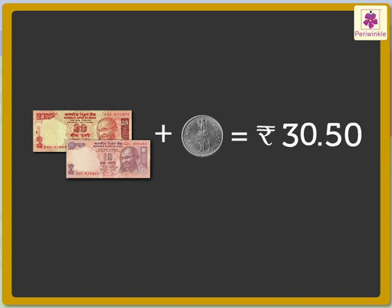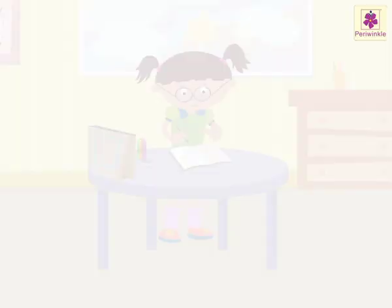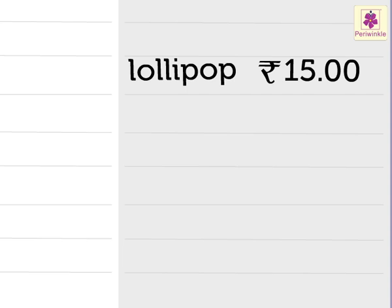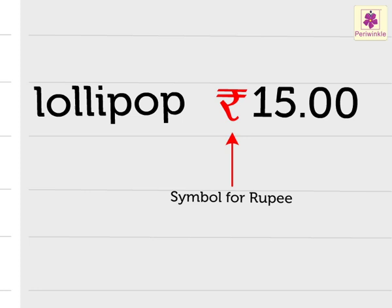Saira is back from shopping. She is writing down how much money she spent today. Saira has written the price of the lollipop. Let me explain to you how she has written the amount. This is the symbol for the Indian rupee.